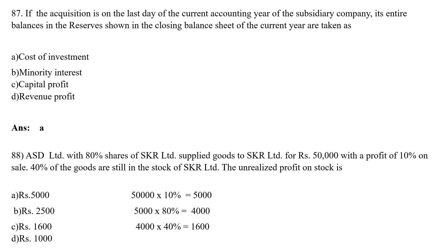MCQ 88: ACD Limited with 80 percent share of SKR Limited supplied goods of Rs.50,000 with a profit of 10 percent on sale. 40 percent of the goods are still in stock of SKR Limited. Calculation: Rs.50,000 × 10% = Rs.5,000 profit; Rs.5,000 × 80% = Rs.4,000 (ACD's share); Rs.4,000 × 40% = Rs.1,600. The unrealized profit in stock is Rs.1,600.